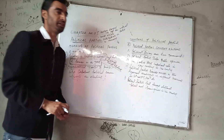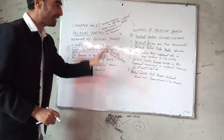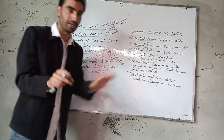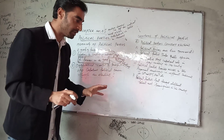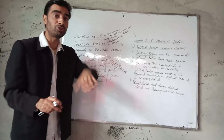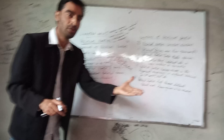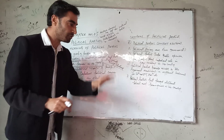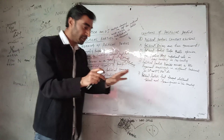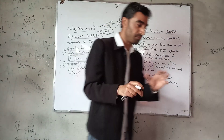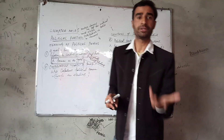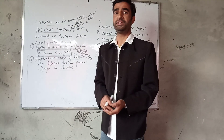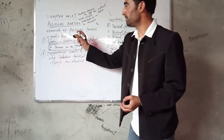One more definition: a political party also means a group of organized people who come together to capture political power through elections. When they get a majority of the votes, they hold power within the government and form a government.